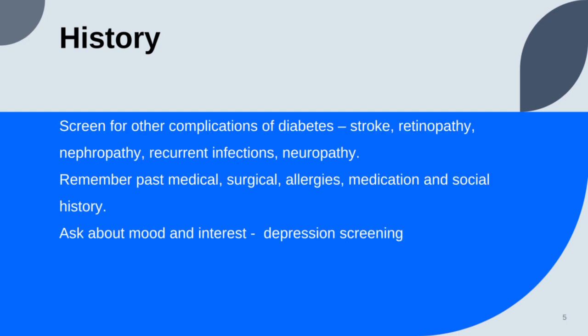Once you've done that, move on to screen for other complications of diabetes, like stroke, retinopathy, nephropathy — have they had a seizure, loss of consciousness, blurry vision, blood in the urine, recurrent infections, cramping sensation in the hand and the foot. Remember to complete your history following the other basic history tenets like past medical and surgical history, allergies, medication, and social history. Ask about the mood and the interest of the patient because you want to screen for depression as well, as it's sometimes a complication of diabetes.